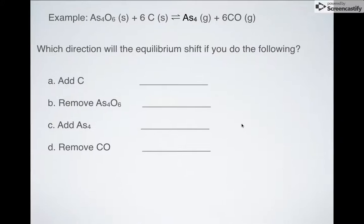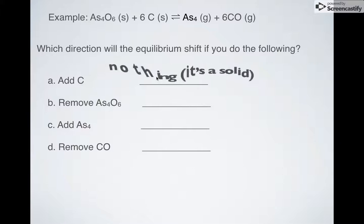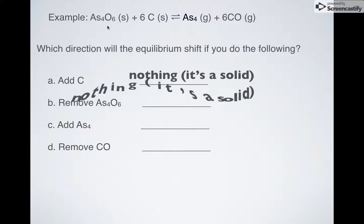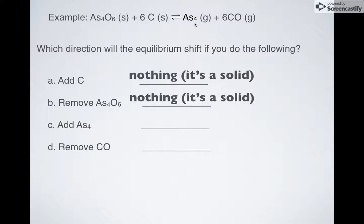Try this one for size. What if I add more carbon? Nothing happens — it's a solid. Yes, I was trying to trick you. What if I remove it? Nothing happens — it's a solid. Trying to trick you again. What if I add more CO? It's going to go to the left, because it needs to make more reactants. What if I remove CO? It's going to go to the right, needing to make more of that substance.